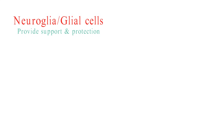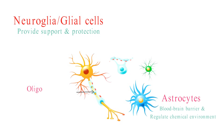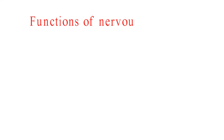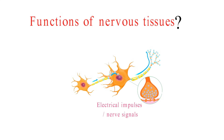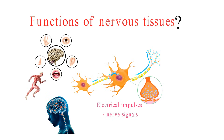Neuroglia, or glial cells, are the unsung heroes of the nervous system. They provide support and protection to neurons. Types of glial cells include astrocytes, which maintain the blood-brain barrier and regulate the chemical environment around neurons; oligodendrocytes and Schwann cells, which produce the myelin sheath; microglia, which are the immune cells of the central nervous system; and ependymal cells, which help produce cerebrospinal fluid. The function of nervous tissue is all about transmitting electrical impulses or nerve signals — these signals are vital for sensory perception, motor control, coordination, and communication within our bodies.